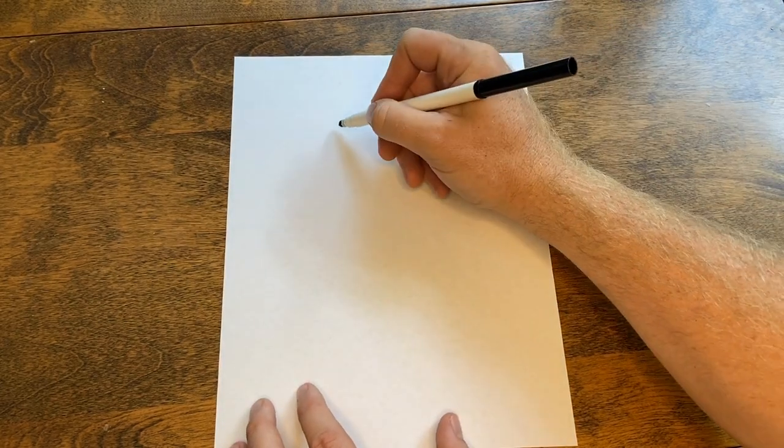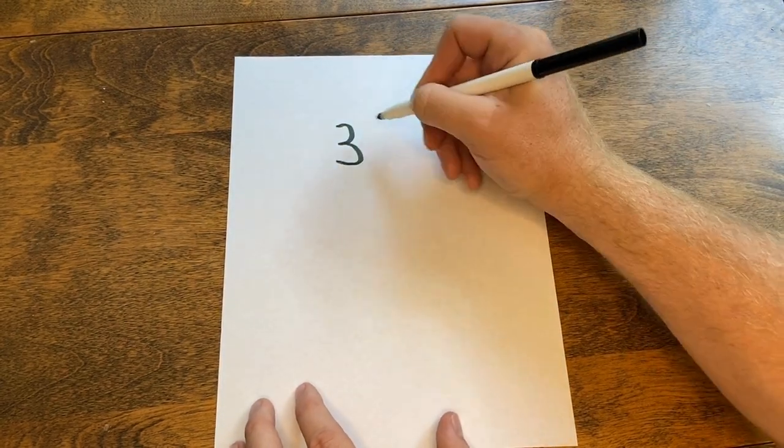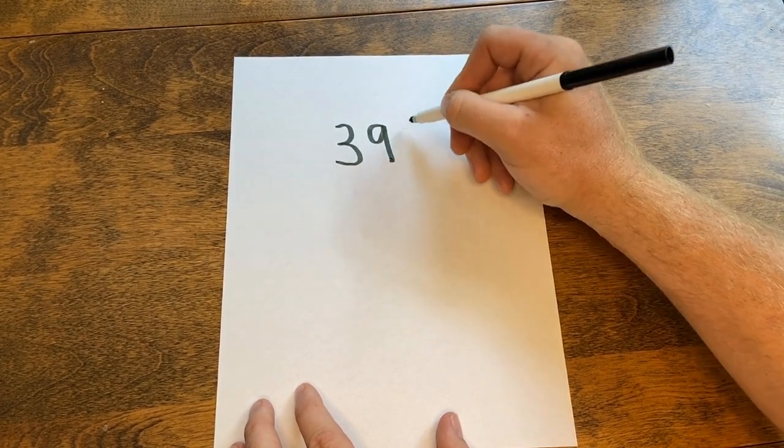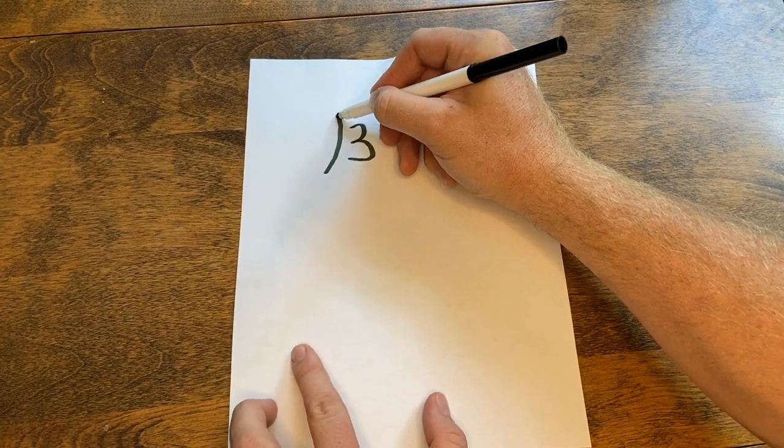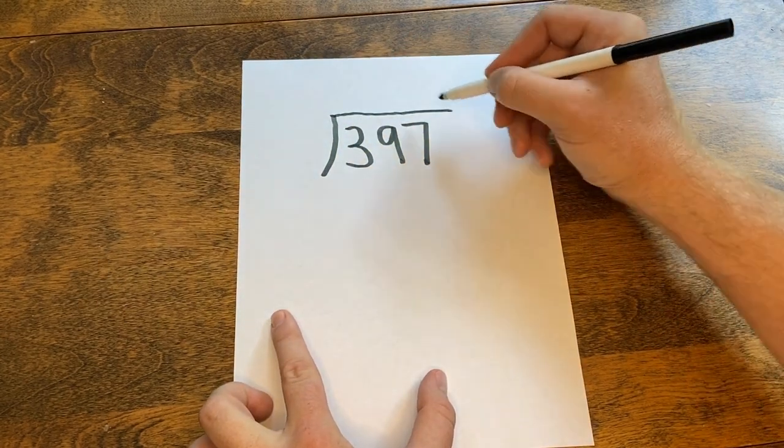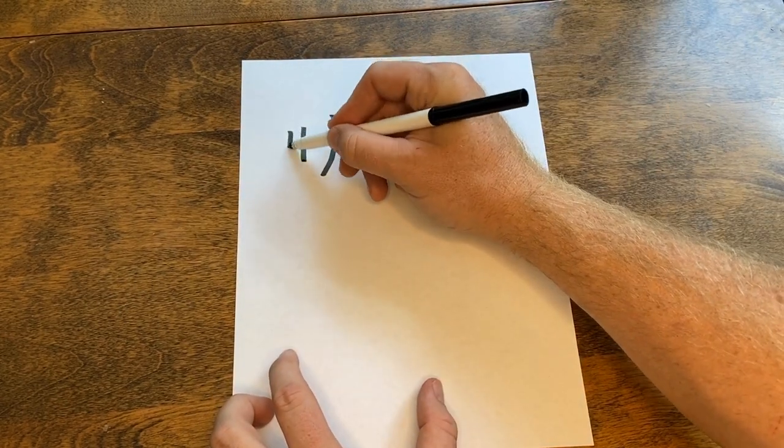The first thing we want to do is carefully copy the problem from the computer screen. You want to double check just to make sure you get the numbers correct. So here we have 397 divided by 4.